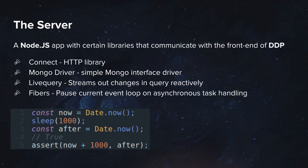So I would like to talk about Meteor's application server. The server uses the Node.js platform and it also uses the DDP client to connect between the backend and the frontend of a Meteor application. DDP stands for Distributed Data Protocol, invented by the Meteor team themselves, and it is based on WebSockets, meaning the client and server can communicate with each other live. The server uses the connect library to handle certain HTTP requests. It also uses the official Mongo driver to communicate with the database. And the server provides you with a feature called Live Query.